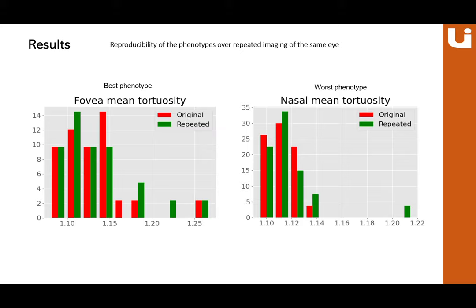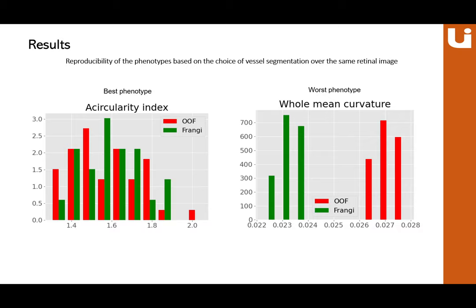Looking at the histograms: for the first part, even the worst-performing phenotype looks good. For the second part, the best phenotype — the circularity index — still looks acceptable, but for most other phenotypes the histograms show they are not consistent at all across the two segmentation methods.